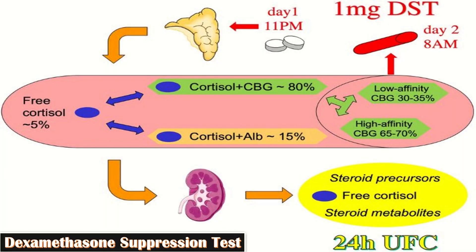For assessment and diagnosis, a very important test is the dexamethasone suppression test. Dexamethasone 1 mg is administered orally at 11 PM, and plasma cortisol is obtained at 8 AM the next morning. This is usually the test that confirms the diagnosis of Cushing syndrome.